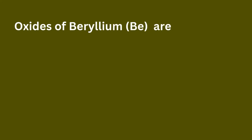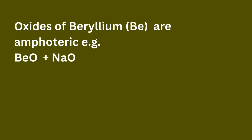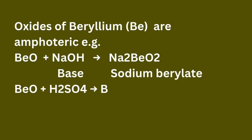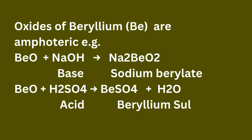Oxides of beryllium (Be) are amphoteric. For example, BeO reacts with NaOH (a base) and forms Na2BeO2, sodium berylate. BeO also reacts with H2SO4 (acid) and forms BeSO4, beryllium sulfate, and H2O (water).